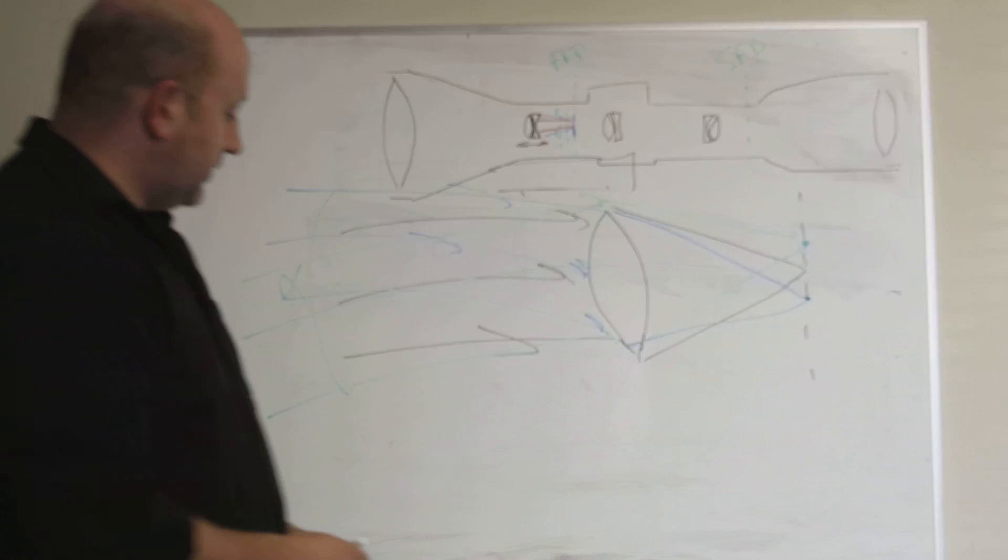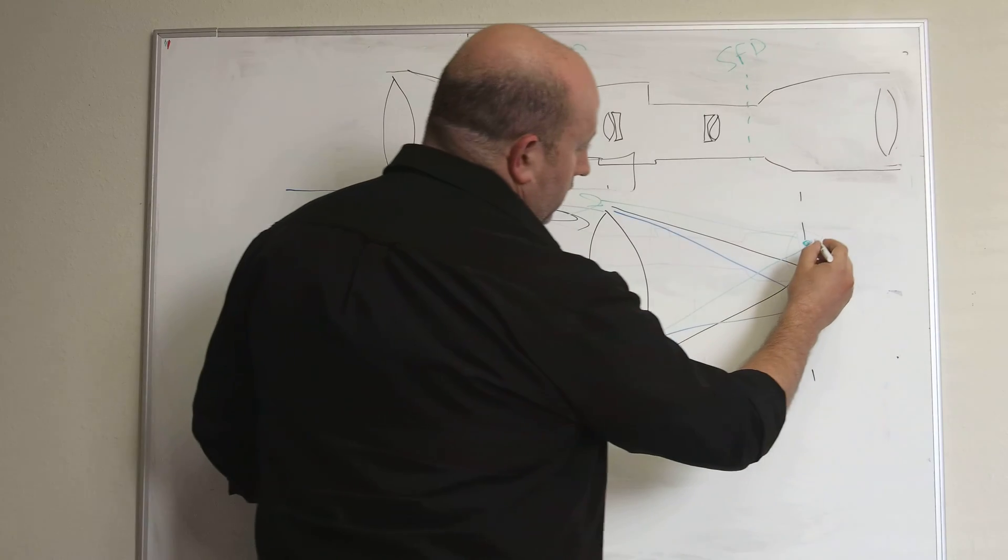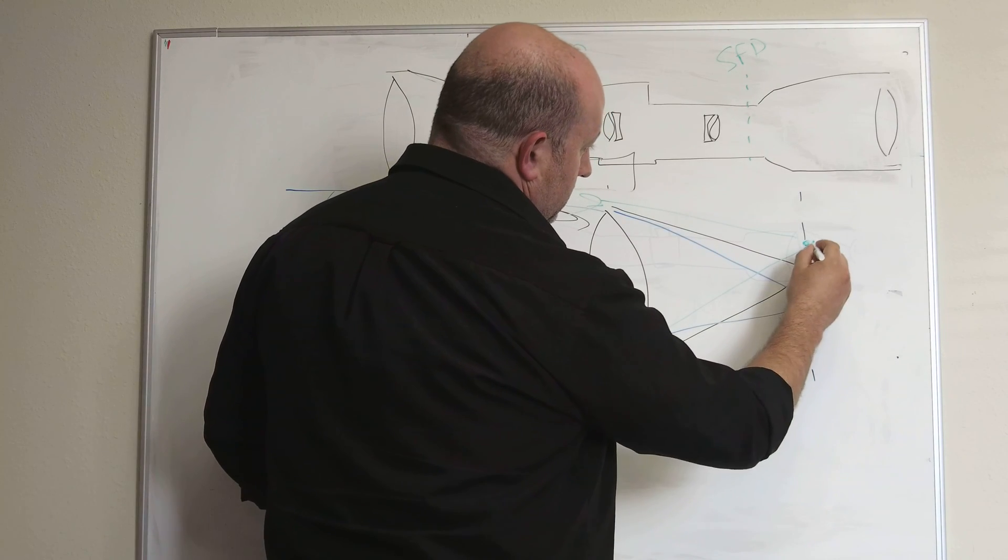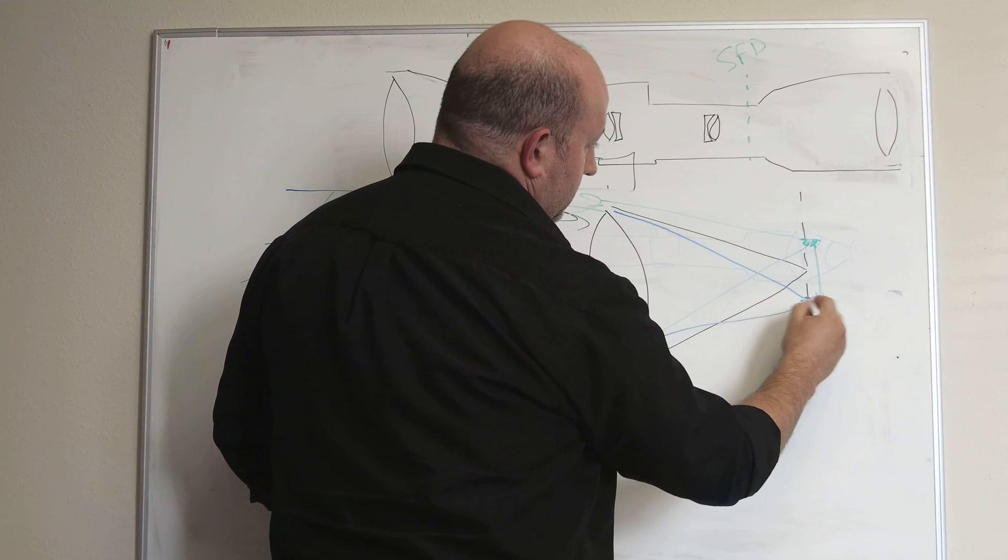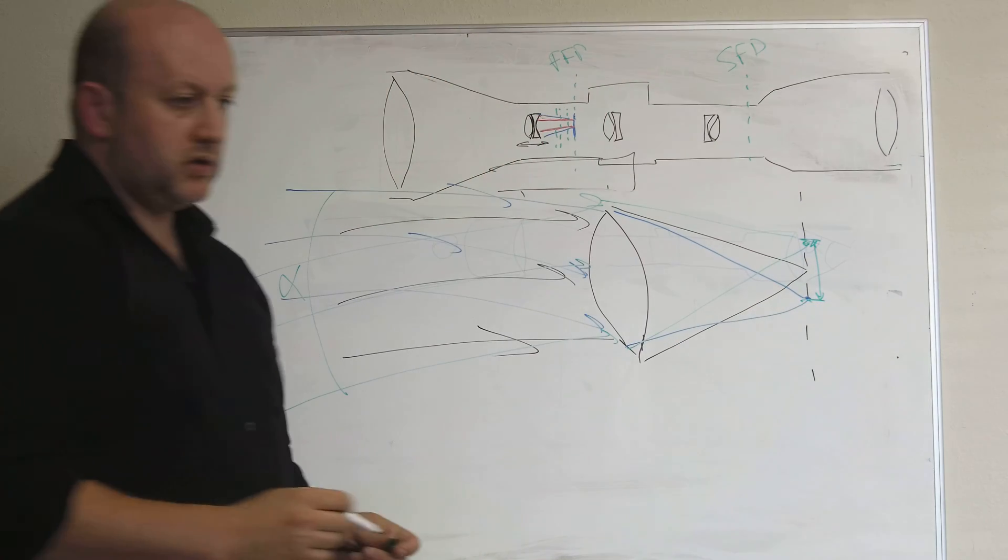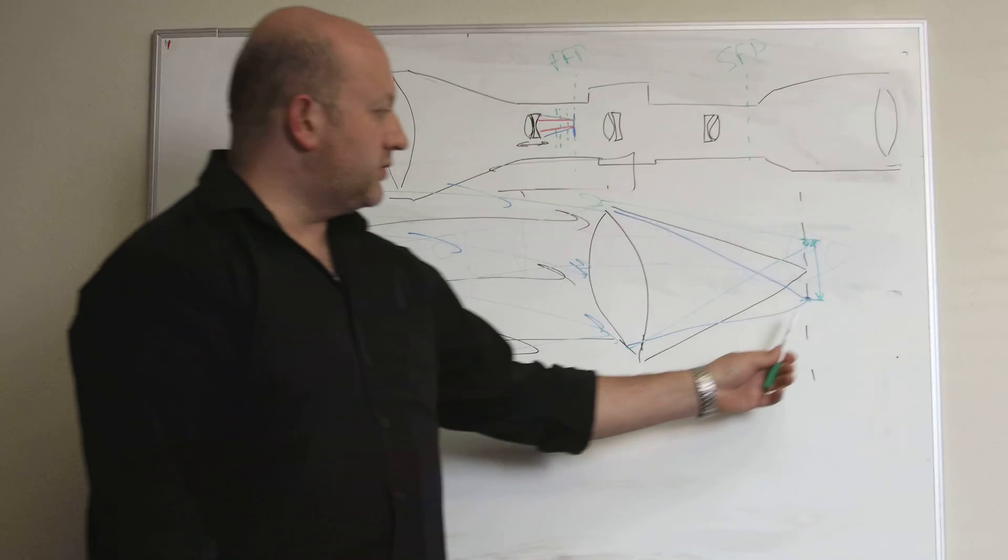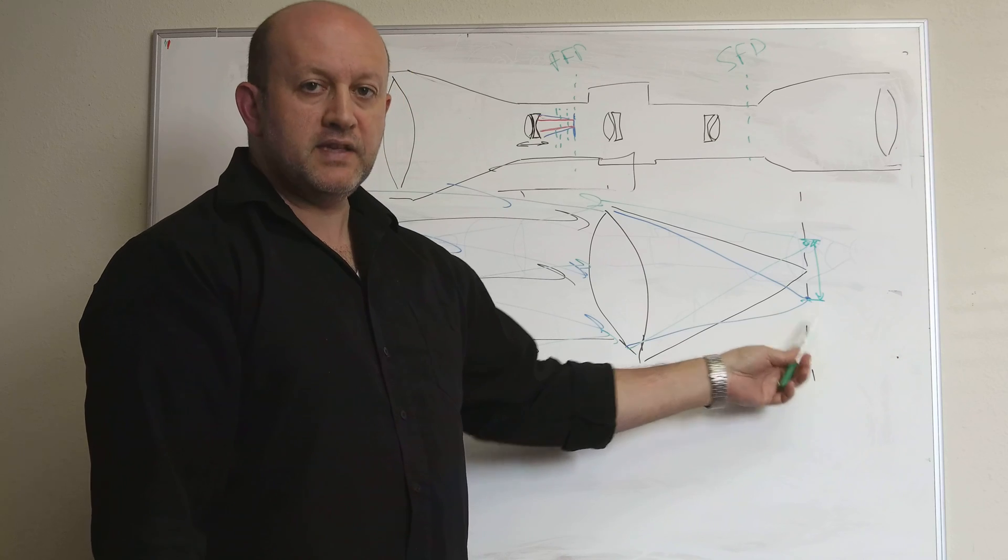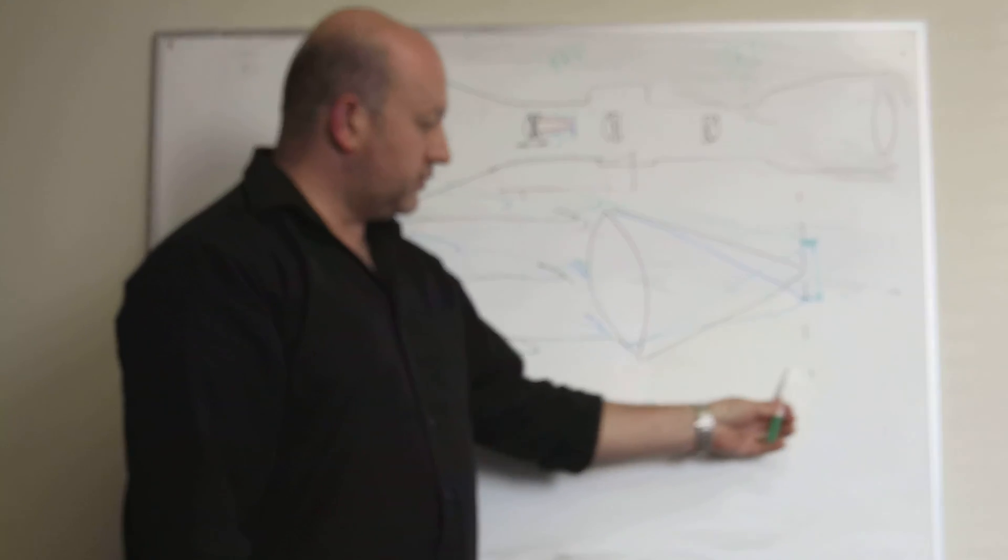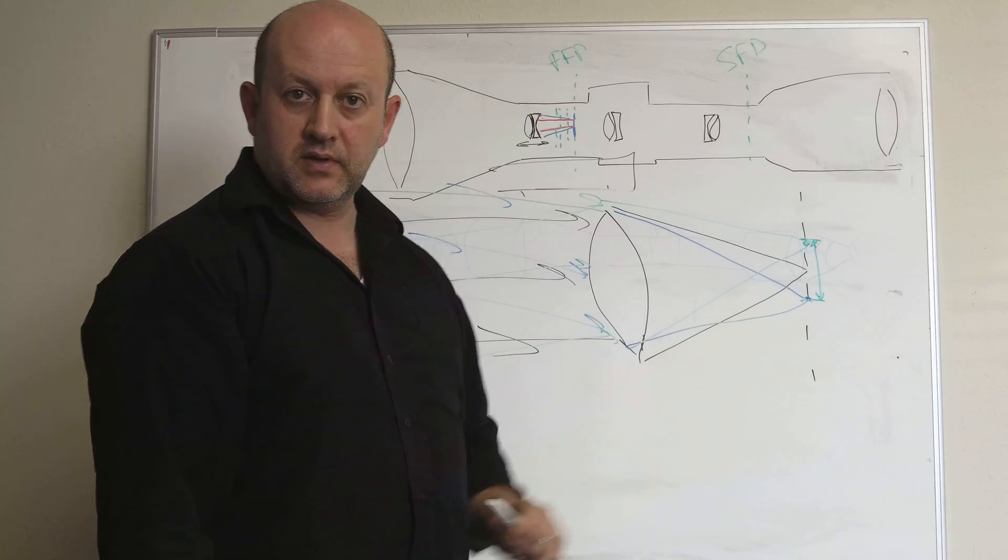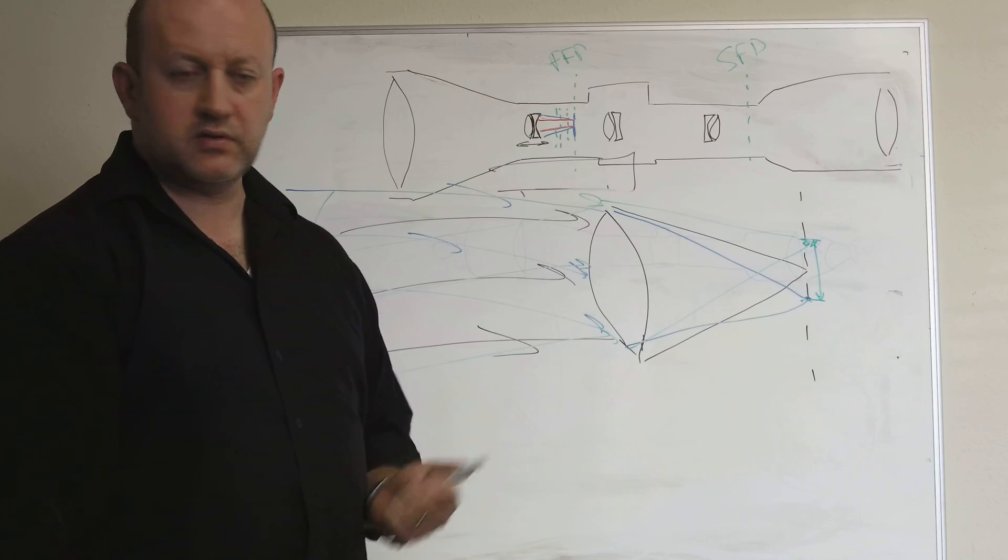And this angle basically defines how large your image is in the focal plane to this extent. So if you're looking at some sort of a particular field of view, that field of view will define how large the images at the focal plane as a function of the focal length of this distance. Is any of this making sense? I hope it is.